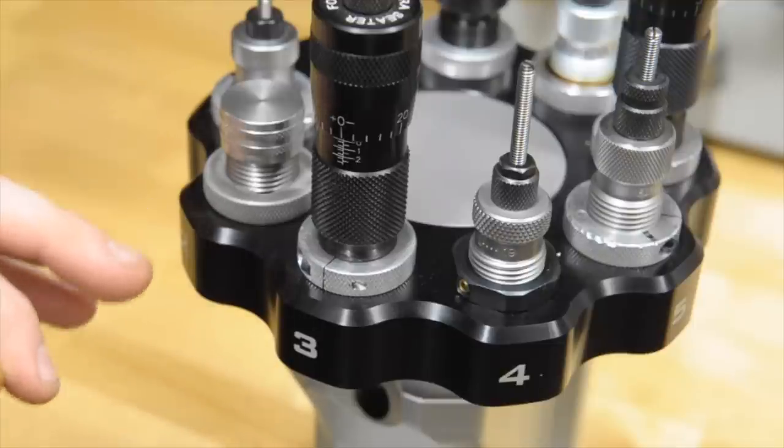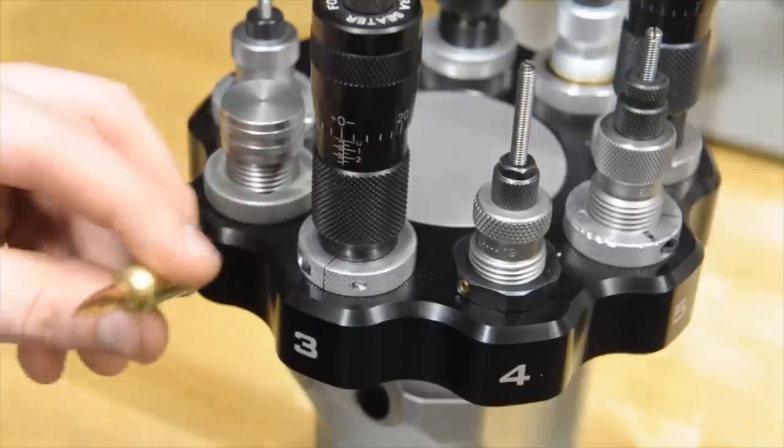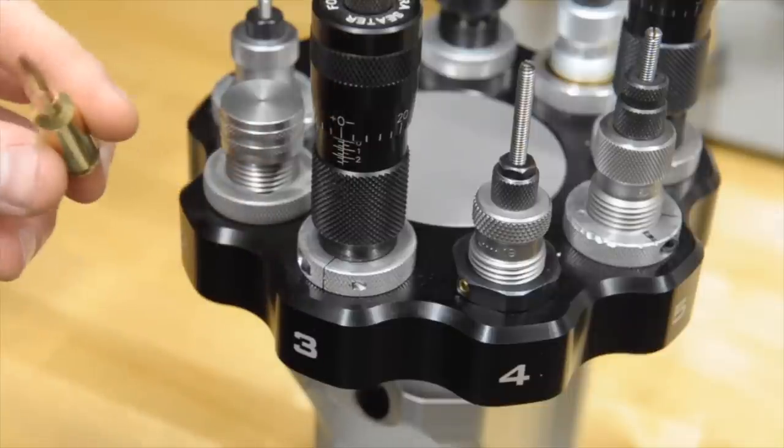So we'll just go ahead. We'll say, at fifteen thou down further, is going to be off the lands. Nothing. No click. Goes all the way up. No hard stop. So this is at the point where we know exactly where our lands at. This round is sized exactly to our chamber. And the bullet, the exact bullet we're going to use from that lot of bullets, is also seated to our lands where they're at.